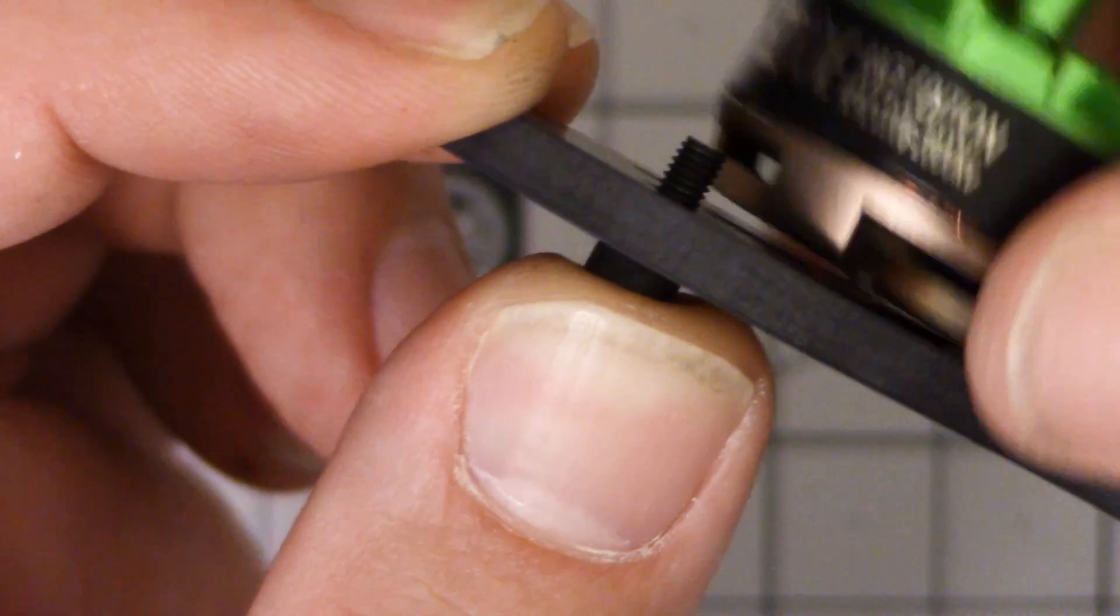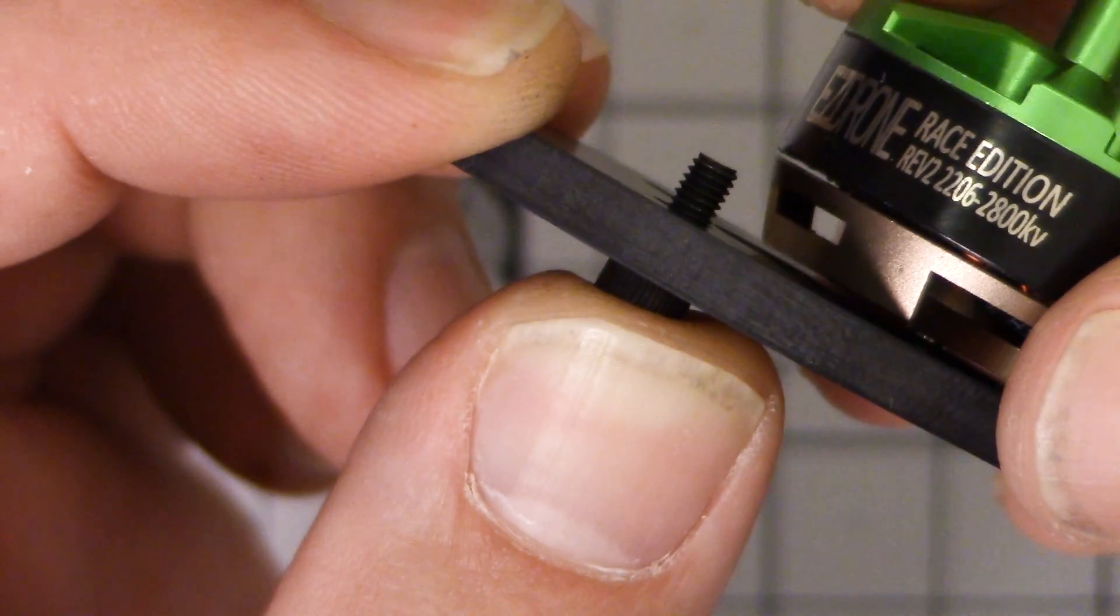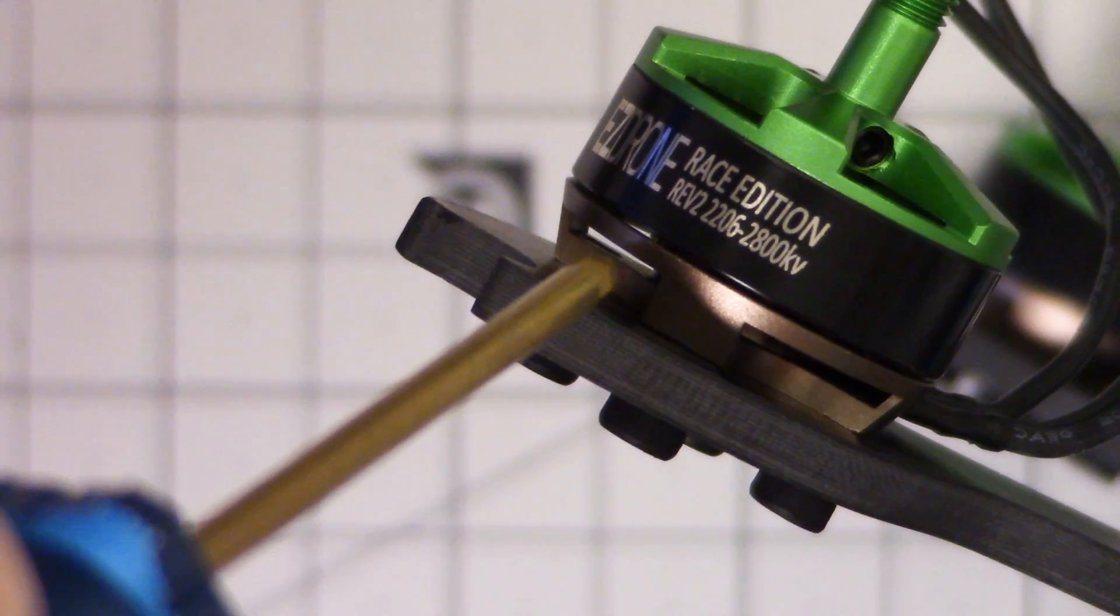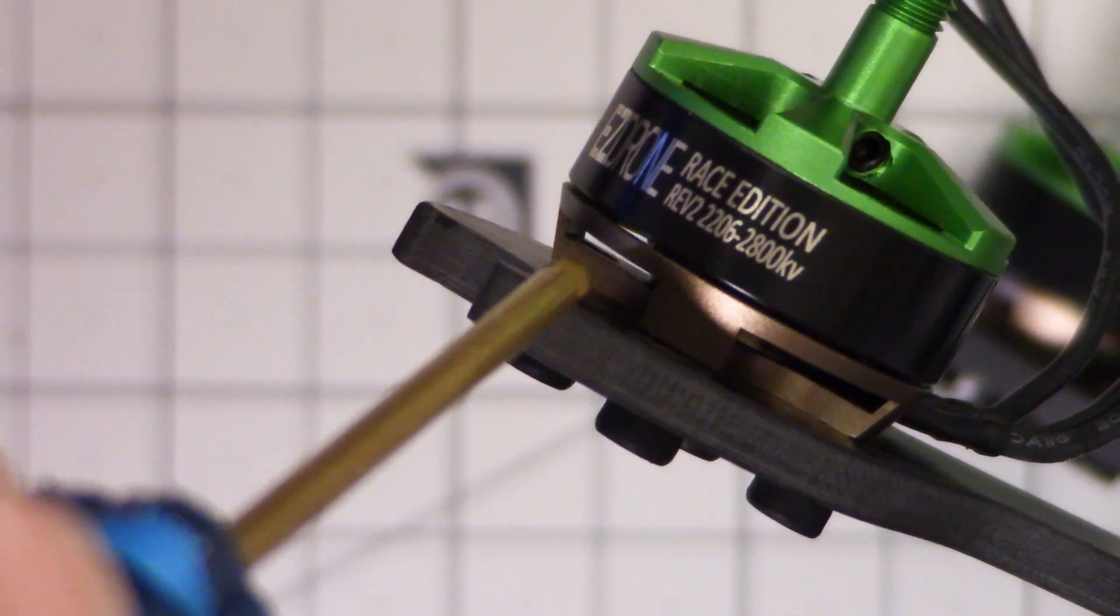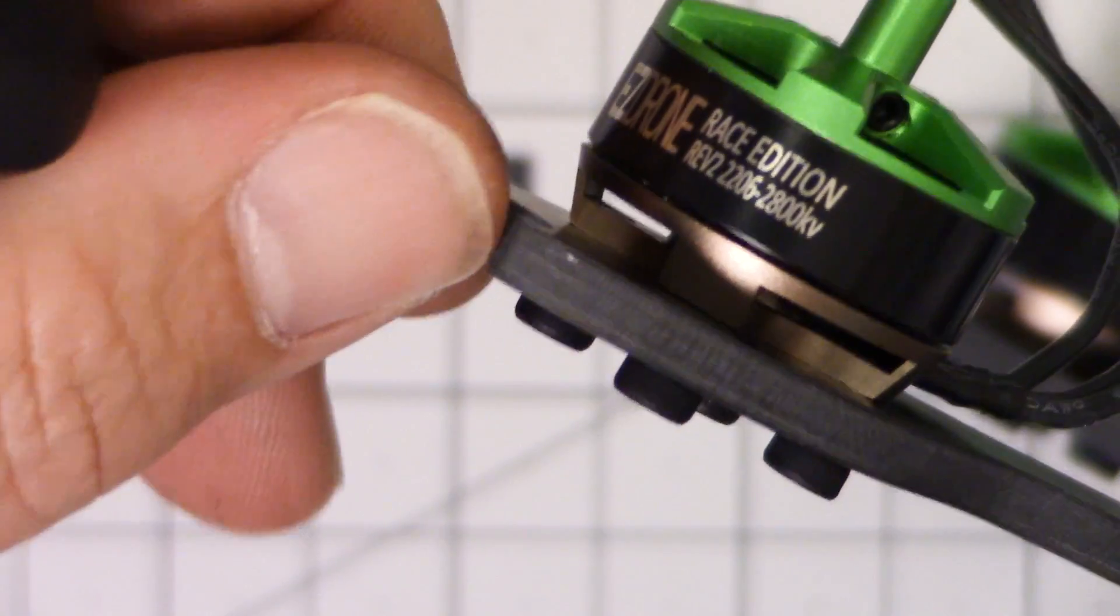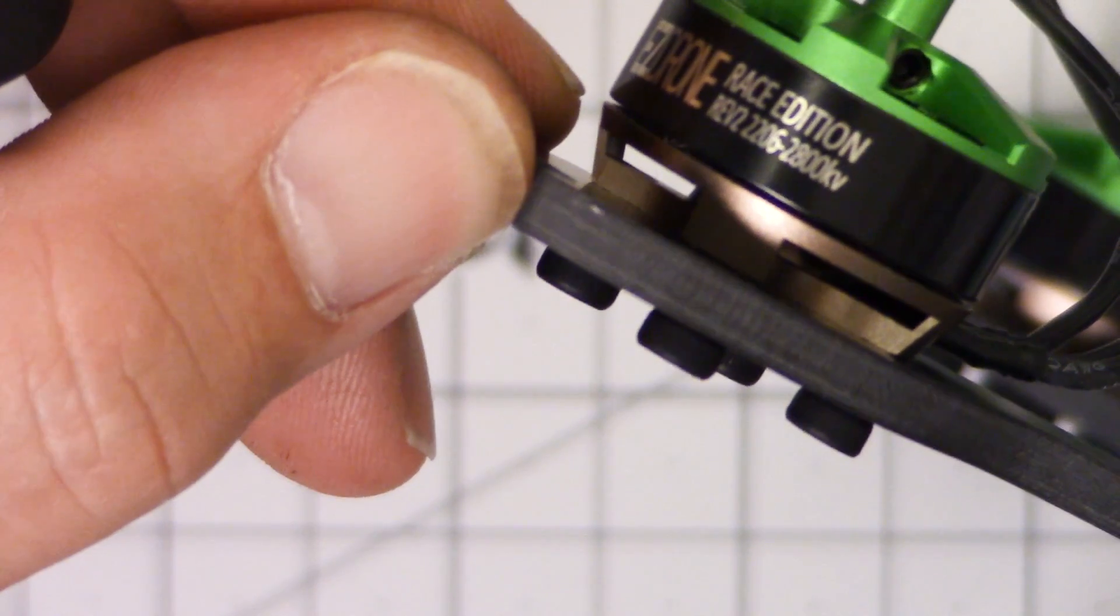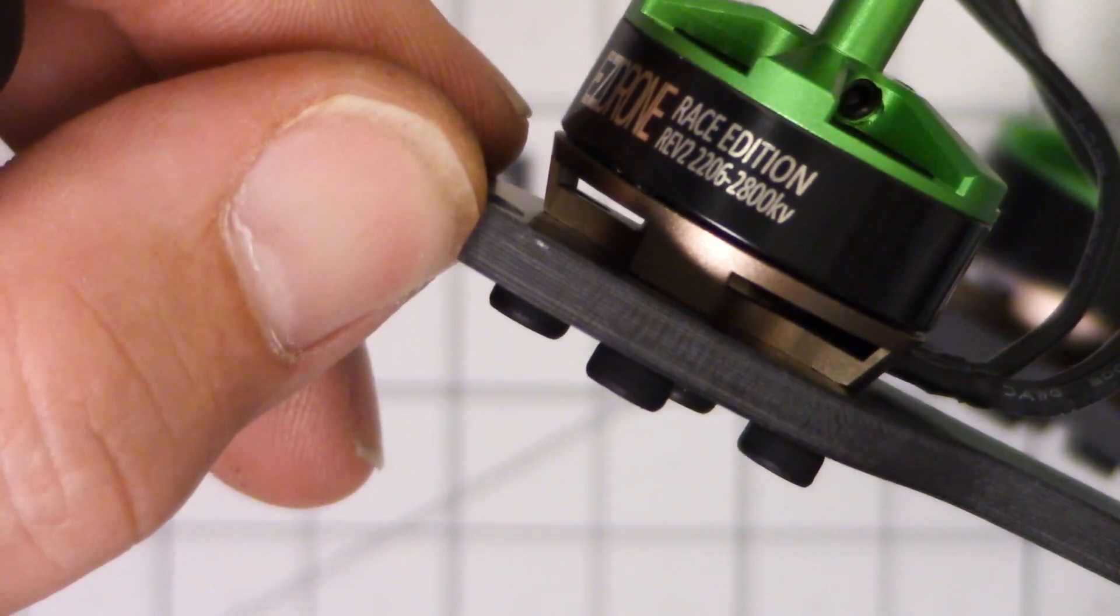Yeah it rubs so you definitely would want to think twice about using a screw this long because it might could get up in there. If we take a look right here you can see that the screw head is just flush with the top of the motor base.